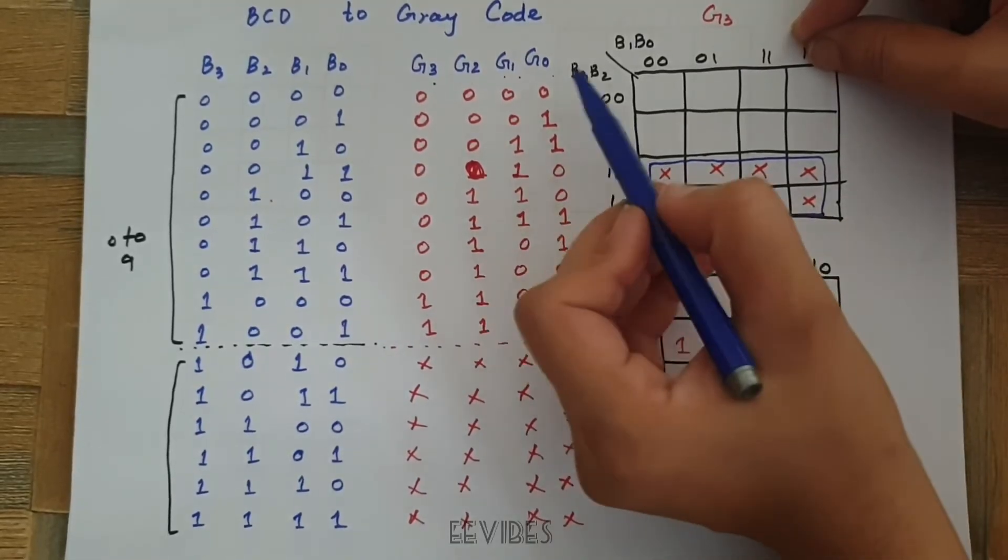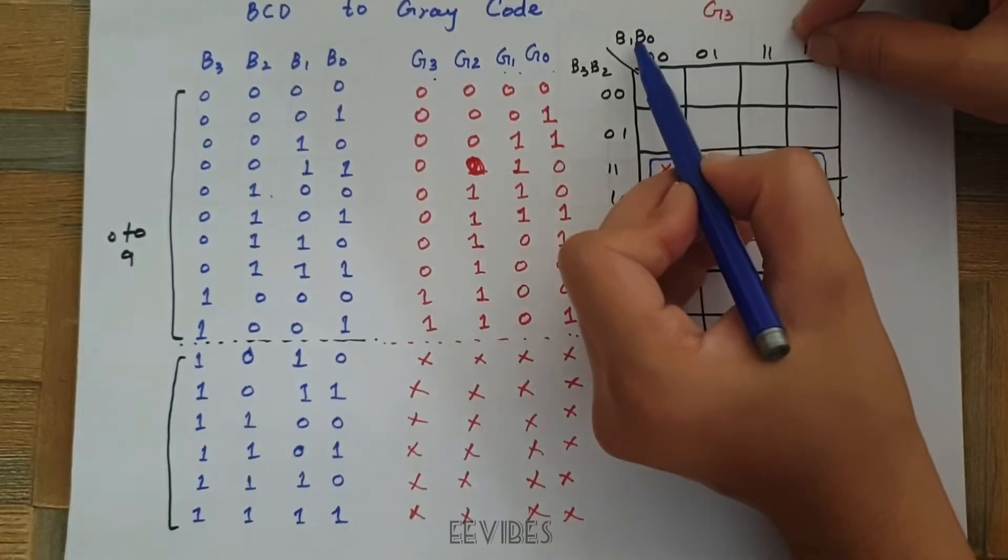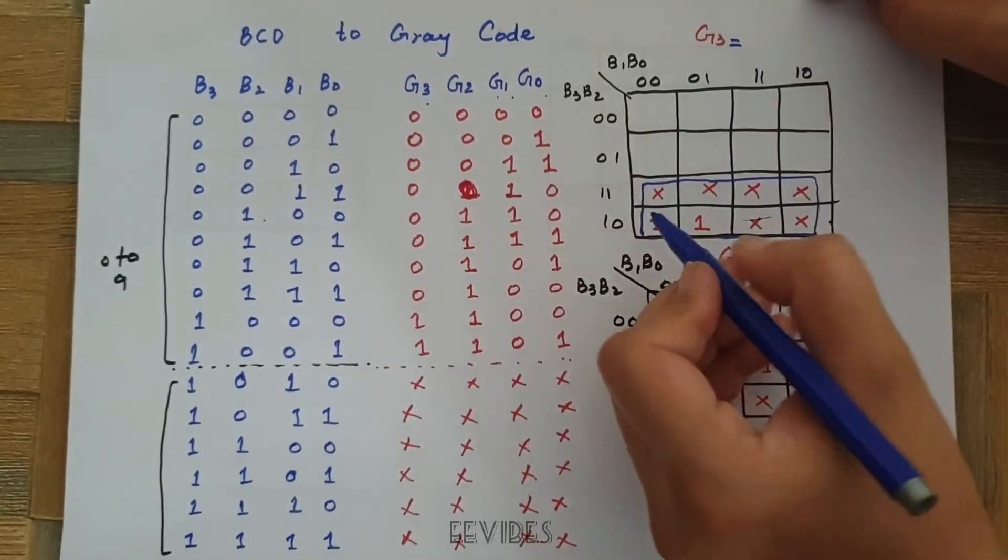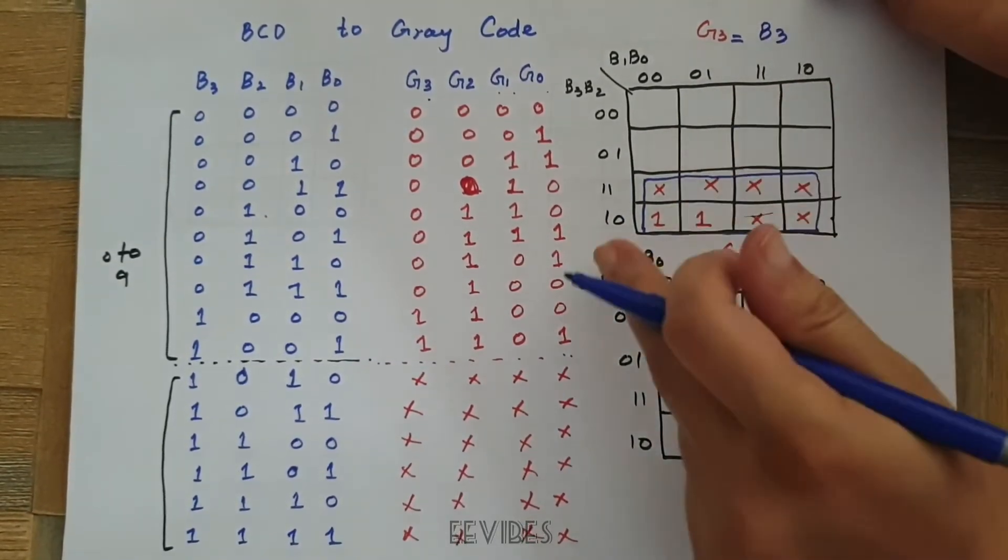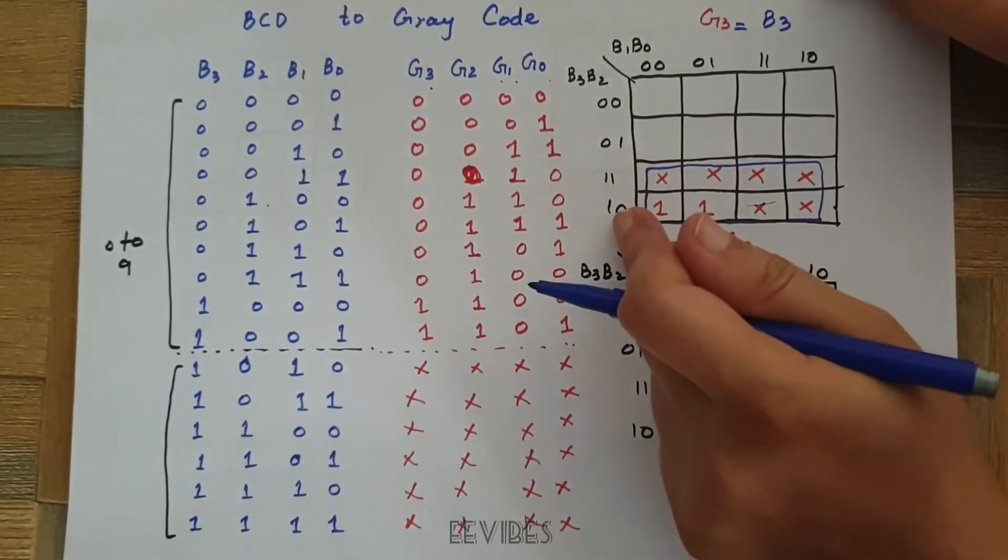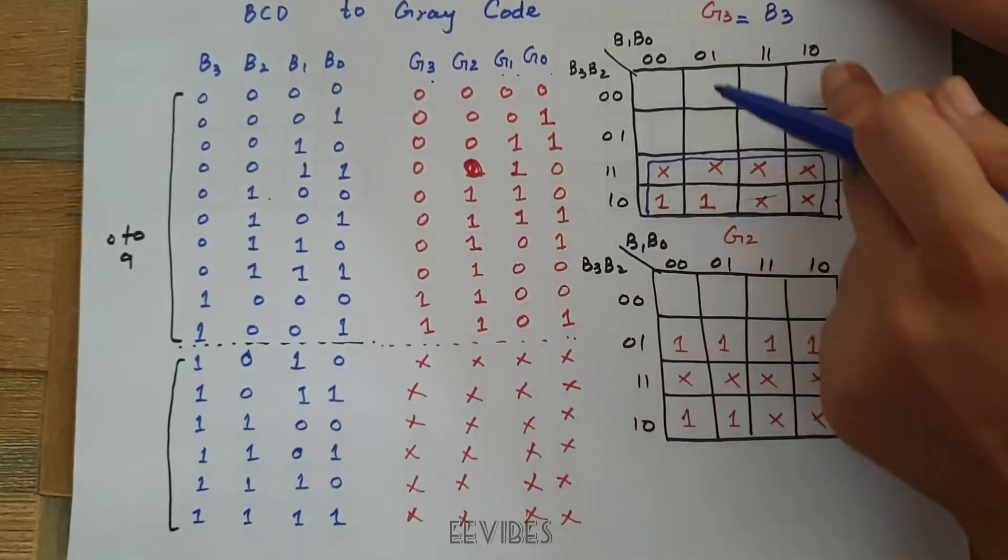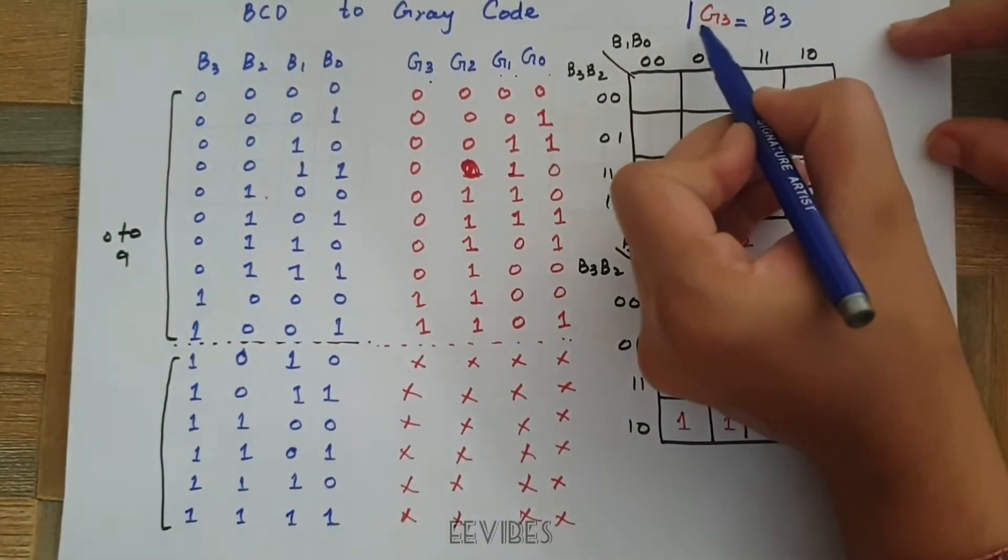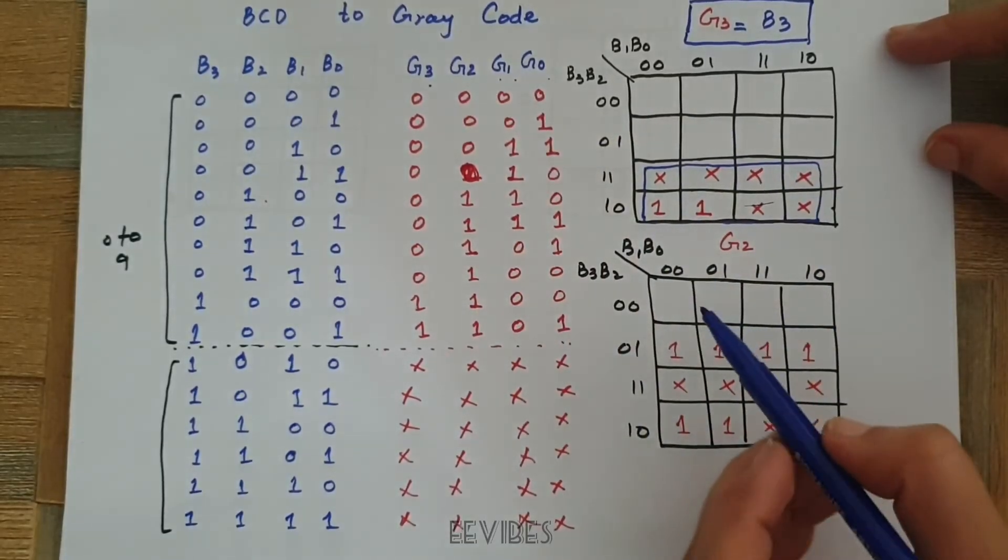Let's just combine these 8 consecutive or adjacent boxes for determining the expression of G3. One thing to be noticed is that you will be writing the bits in the form of B0, B1, B2 and B3. So, you can see G3 comes out to be only B3.